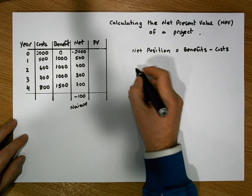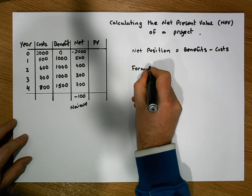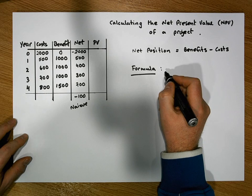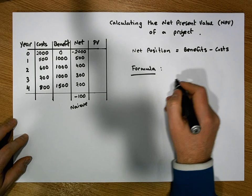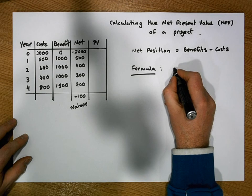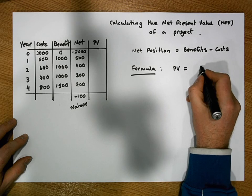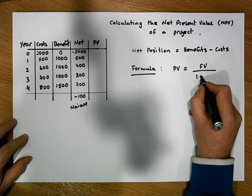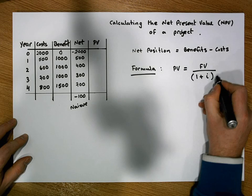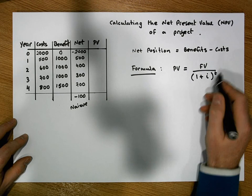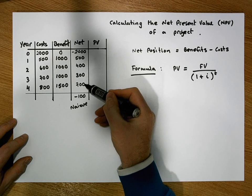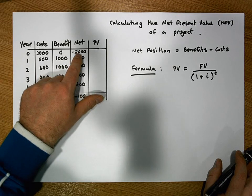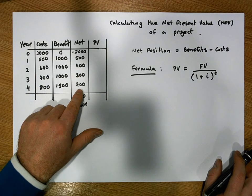We have a formula to help us calculate the present value. The present value of some future value is simply equal to the future value divided by (1 + r)^t, where r is the interest rate and t represents how many years we're discounting the future value back by.